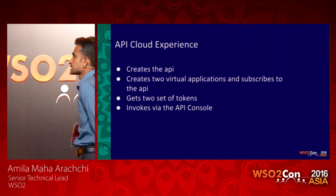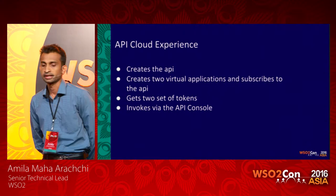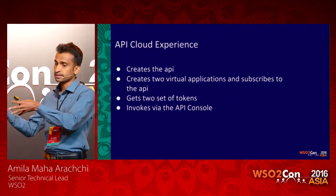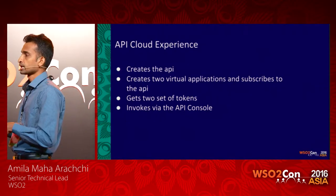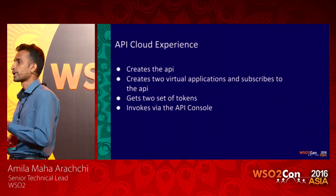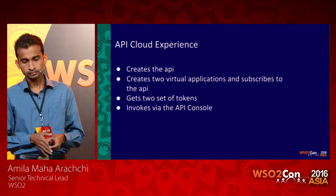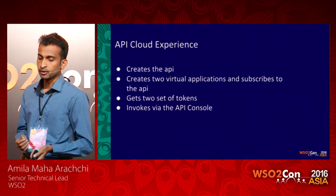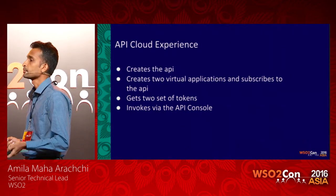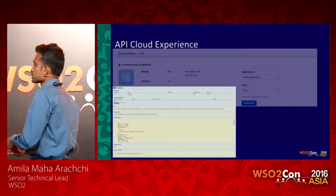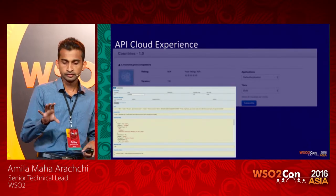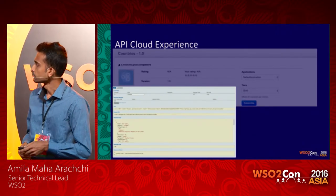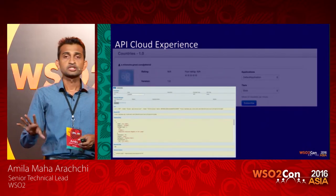Bill goes to the API Cloud. His first experience is a very convenient interactive tutorial which helps him create his first API and publish it — within less than five minutes he has a sample API created and published. He then refers to documentation covering other features: how to create APIs, create resources, restrict certain resources to certain people, and token generation mechanisms. The documentation has step-by-step instructions and screencasts hosted on YouTube. He creates the API and publishes it, then goes to the API Store and subscribes by creating two virtual applications, generating tokens, and invoking his APIs via the API console.